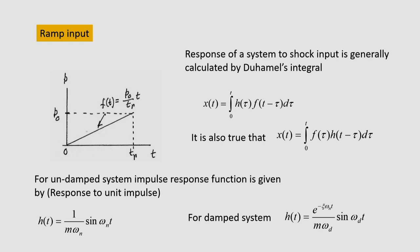Let us first consider the ramp input — the forcing function is linearly varying. The ramp input rises up to time Tr, and the magnitude at that point is the maximum force P0. The variation is given as (P0/Tr)·t for 0 < t < Tr. This type of excitation is known as ramp input.